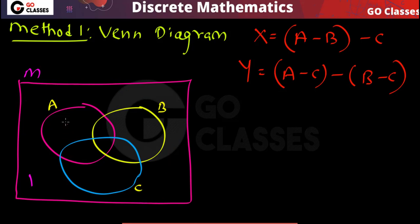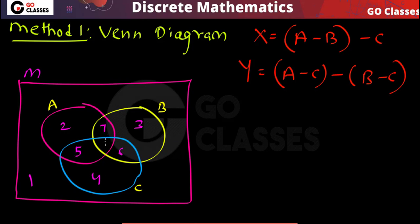Because of three sets, the Venn diagram has a total of 8 areas. Area 1 is the outside area. Area 2 is 'only A.' Area 3 is 'only B.' Area 4 is 'only C.' Then we have areas 5, 6, 7, and 8. So total 8 areas with three sets.